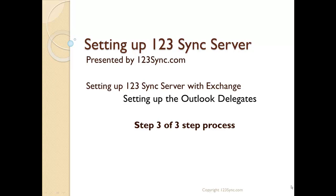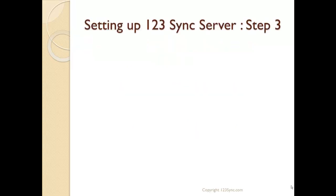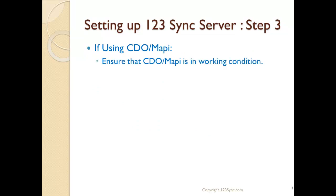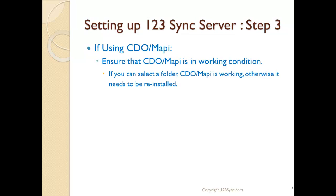Last but not least, we now have to set up the Outlook delegates. This is primarily if you are using Outlook to access your Exchange mailboxes. If you're using a CDO MAPI interface, by now you should be up and running. We don't require any reinstallation because if you succeeded on steps 1 and 2 with MAPI, then step 3 should not be necessary. But if you need to do step 3 and MAPI is not working, you have to reinstall MAPI.